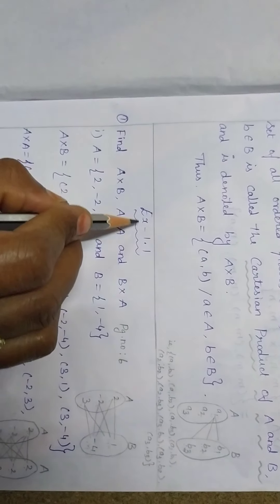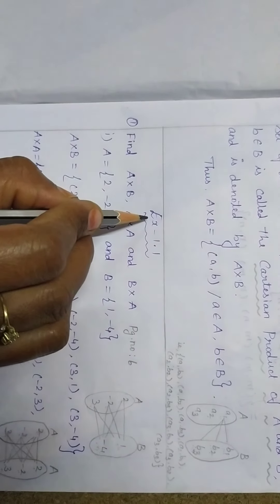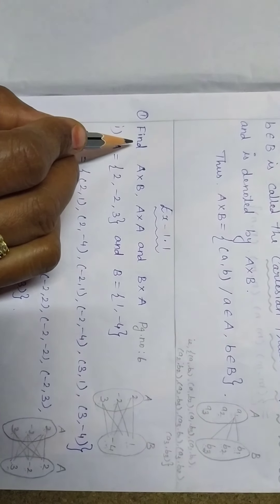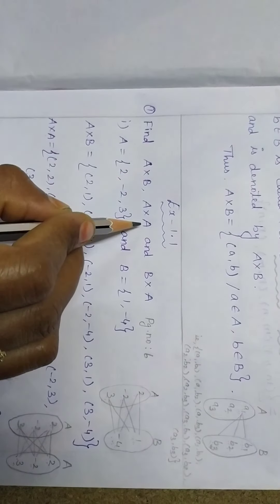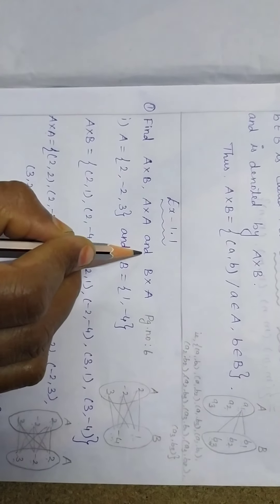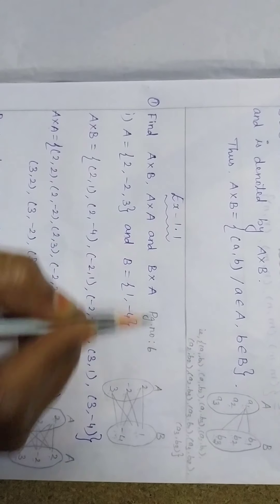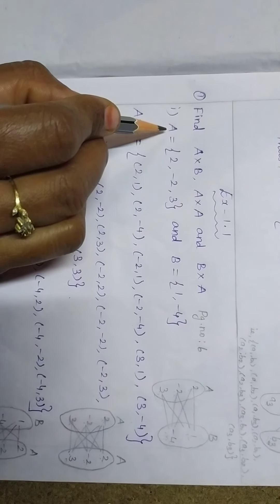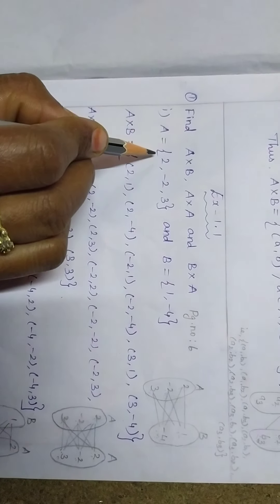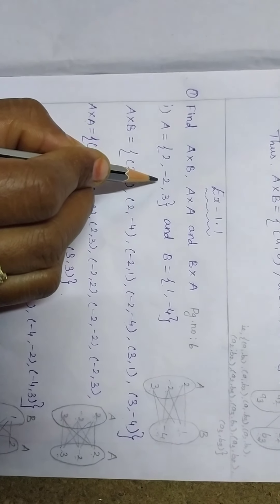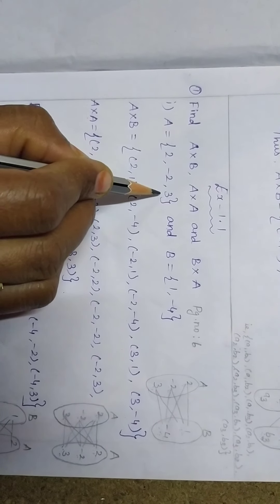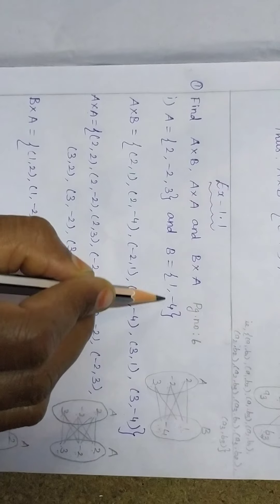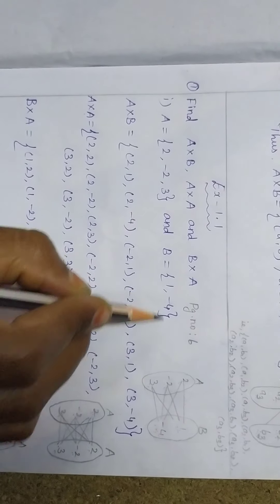Now next we will see Exercise 1.1, first sum: find A cross B, A cross A, and B cross A. Given A is equal to the set {2, -2, 3} and B is equal to the set {1, -4}.